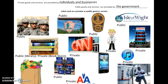Public goods and services are provided by the government; private goods and services are provided by individuals and businesses. Public goods and services are paid for through tax revenue and borrowed funds. That's it for this video - check the board for what you are supposed to do next. Thanks for watching.